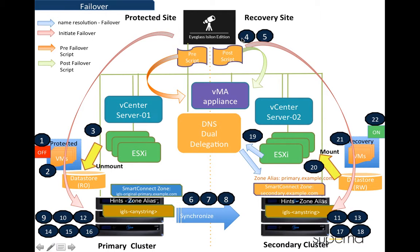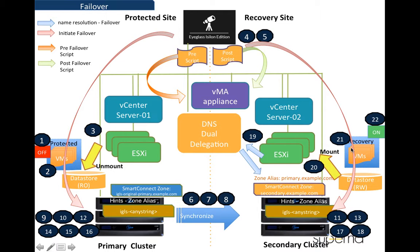Process number 4 is to initiate failover. In this demo, we will show the example of using the EyeGlass API to initiate this failover process. Process numbers 20, 21, and 22 are the post-failover steps. The EyeGlass failover job will execute the post-failover script by communicating with VMA to mount the NFS datastore, add the VM into the vSphere inventory, and bring up the VM on the recovery site.